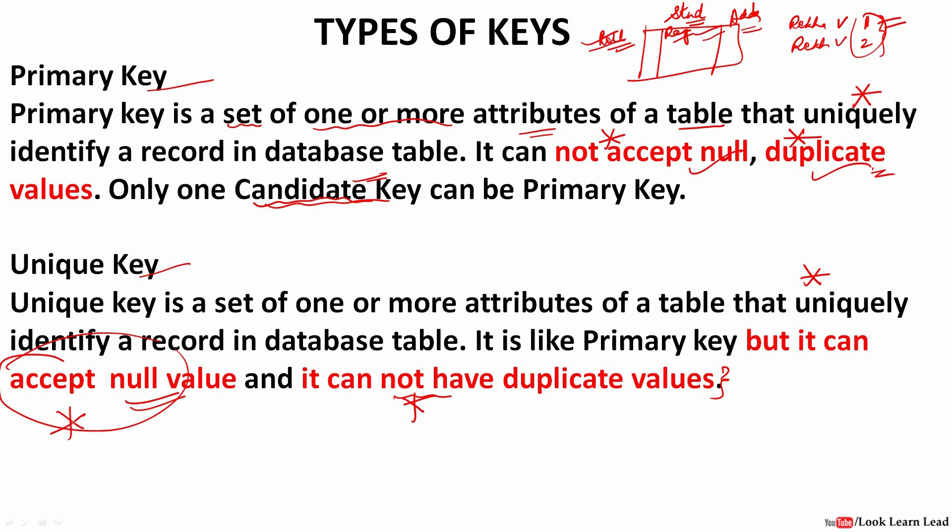The main point about the unique key: there is only one difference between the primary key and the unique key. The primary key cannot accept null values, whereas the unique key can accept null values. They are almost similar but not the same — the unique key cannot have duplicate values just like the primary key, but it can accept null values whereas the primary key cannot.